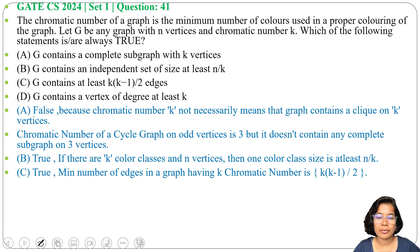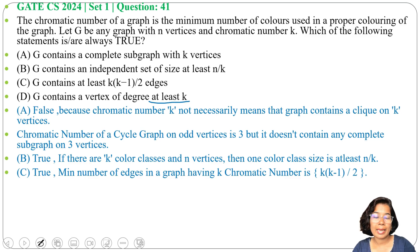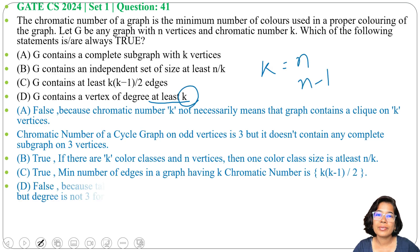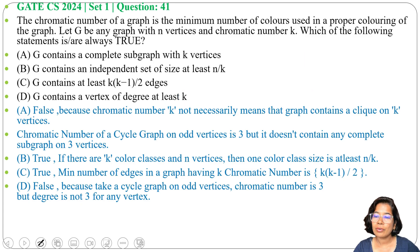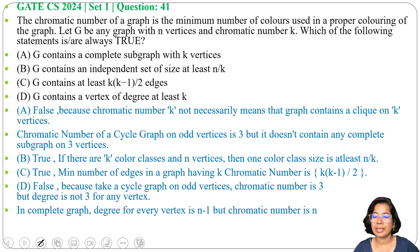Option D: G contains a vertex of degree at least K. This is false. In the case of a complete graph, every vertex degree is N−1, whereas the chromatic number is N. So degree at least K is wrong here — in a complete graph K equals N, but each vertex has degree N−1, which is less than K. Hence option D is false. Options A and D are false, while options B and C are true.